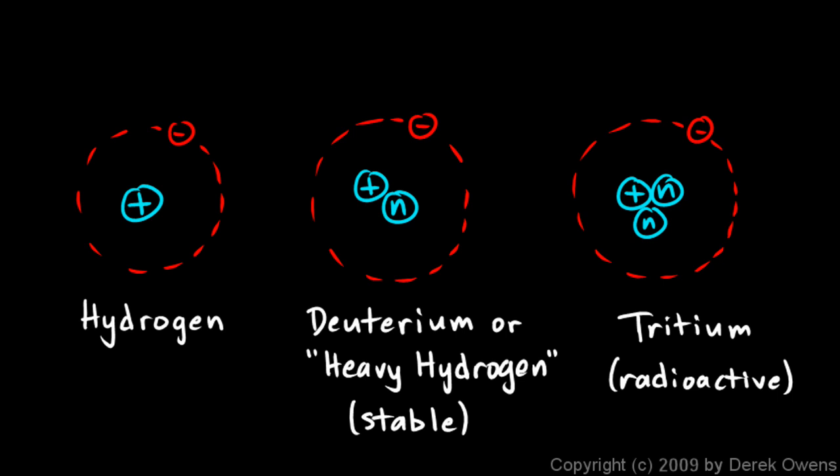And these three forms of hydrogen are called three isotopes of hydrogen. And that's the term to know. An isotope of an atom is just a form of that atom, and different isotopes have different numbers of neutrons in the nucleus.